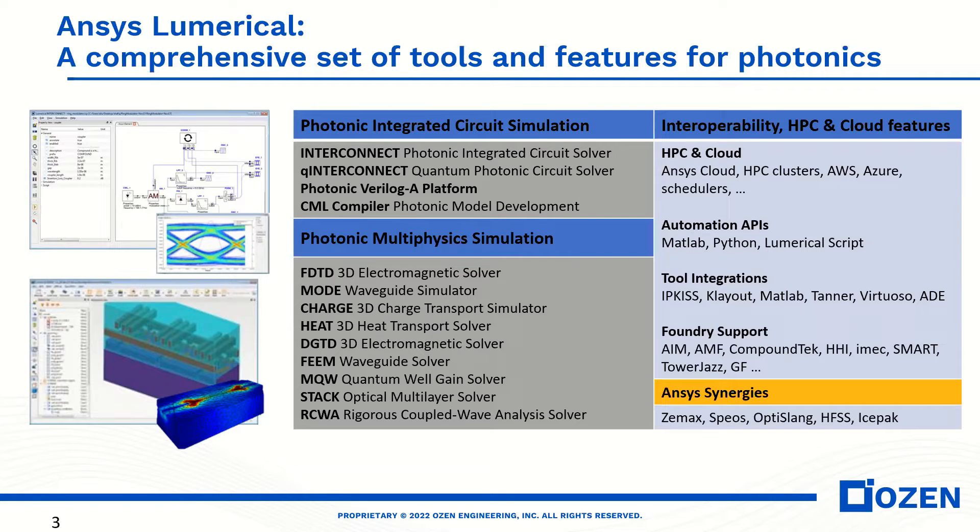And also in the component level it depends on what kind of application you need. ANSYS Lumerical provides a solution at the component level. For instance, in solar cell application we need Lumerical FDTD and charge and heat. We start with Lumerical FDTD to simulate optical parameters and then we use heat and charge to study the heat and charge distribution.